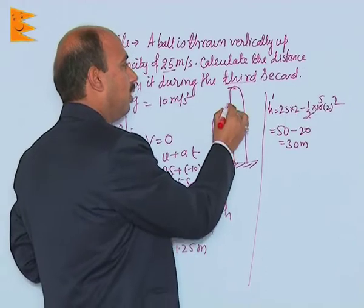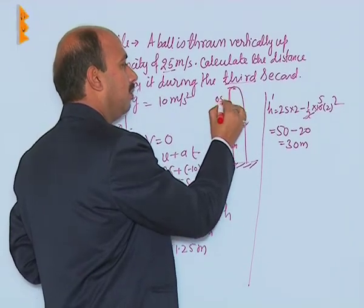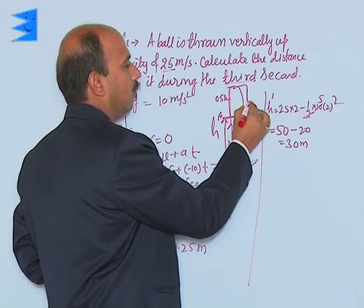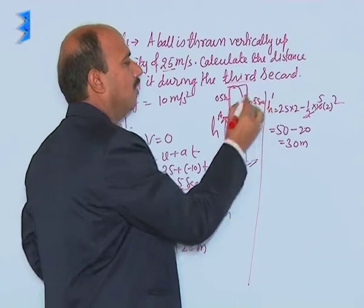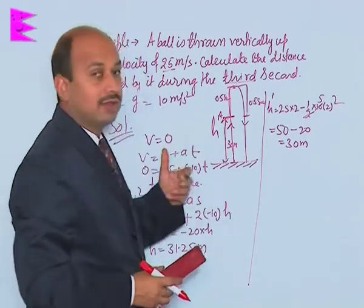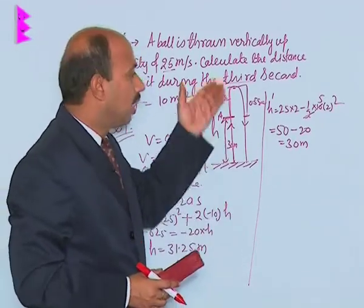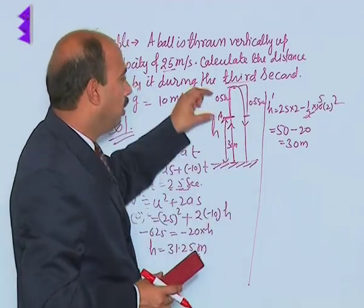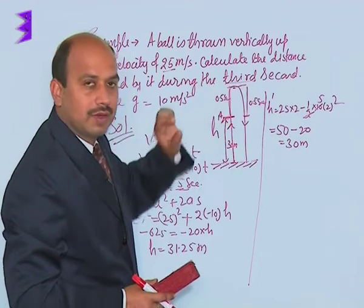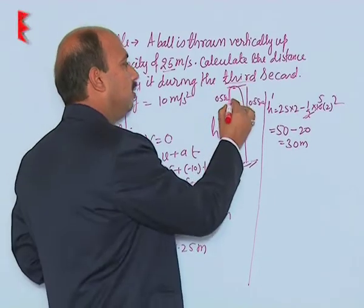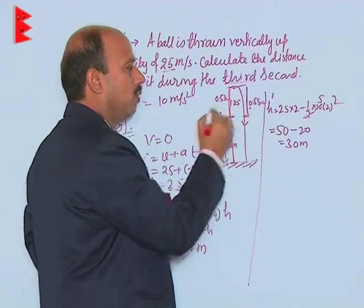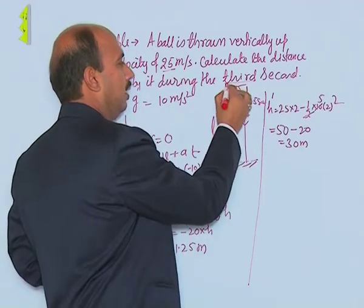The body goes to the top in 0.5 seconds and comes back down in 0.5 seconds. We can use this concept because we're ignoring air resistance and acceleration remains the same whether going up or coming down. The distance is 1.25 meters each way. We can label points A, B, and C.